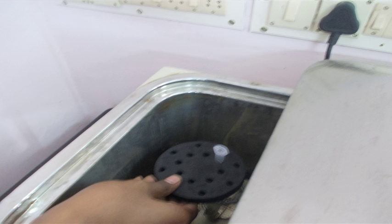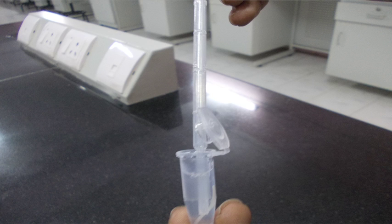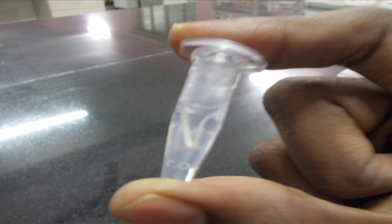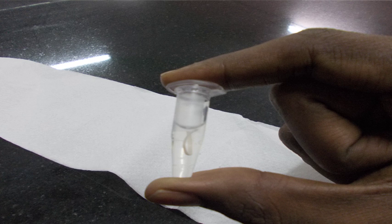After incubation, remove the tube from the water bath. Using the filler, draw the HCL and discard it in running water. Pour a little water in the Eppendorf tube. Close the tube. Shake it nicely. Draw water using the filler. Repeat the process three times.